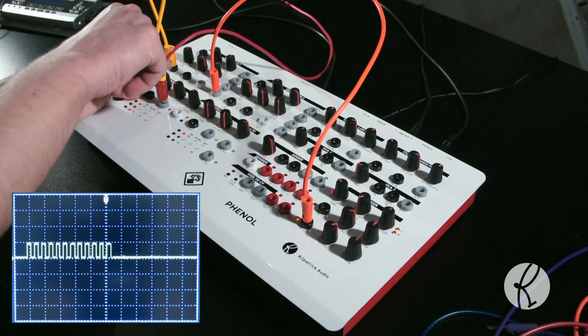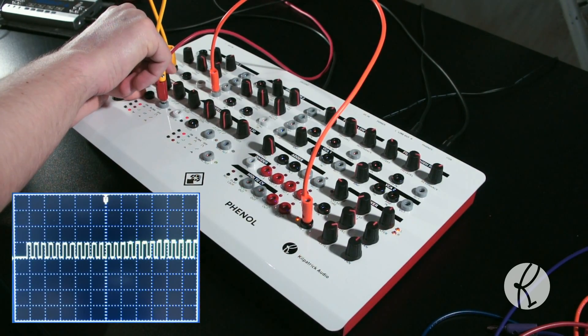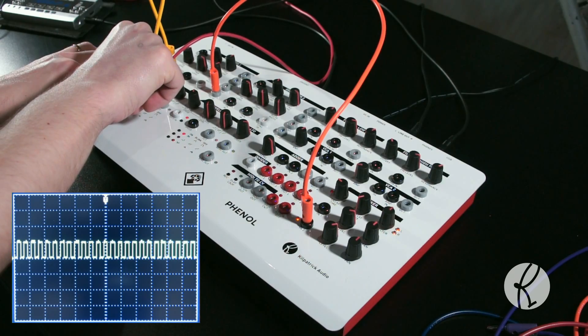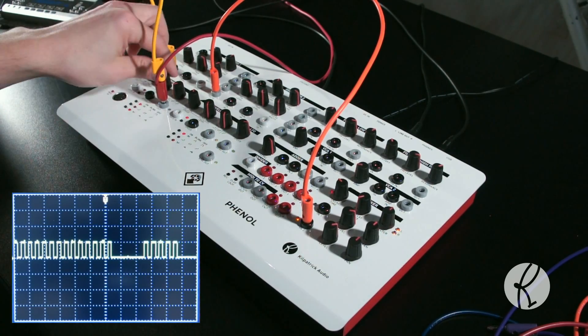The envelope generator also has a speed control input, which can be used to scale the up and down times, or the oscillation frequency.